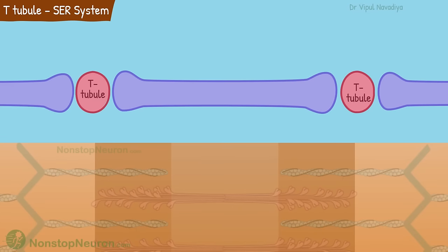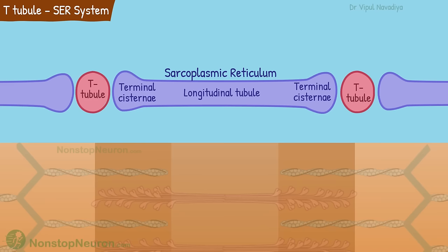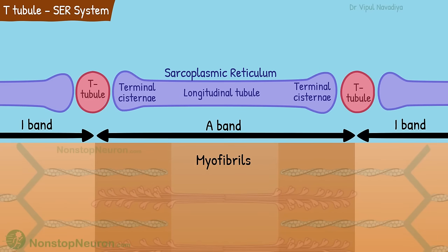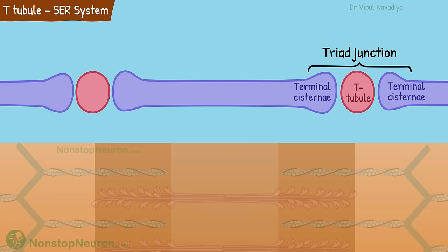These are T-tubules; in a cut section they appear circular. This is the sarcoplasmic reticulum — this is its longitudinal tubule, and these are the terminal cisternae. Underneath we have the myofibril. This is the A-band, and these are the I-bands. The T-tubule is located over the junction of these bands. Now the triad junction: as we have just seen, the triad contains the T-tubule and terminal cisternae on both sides.